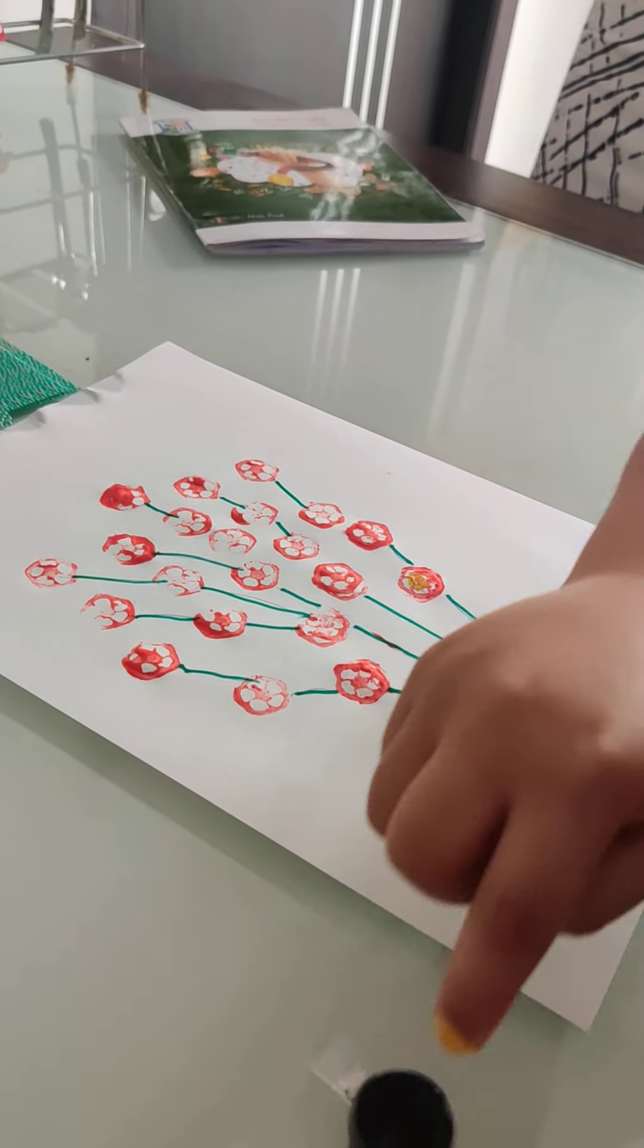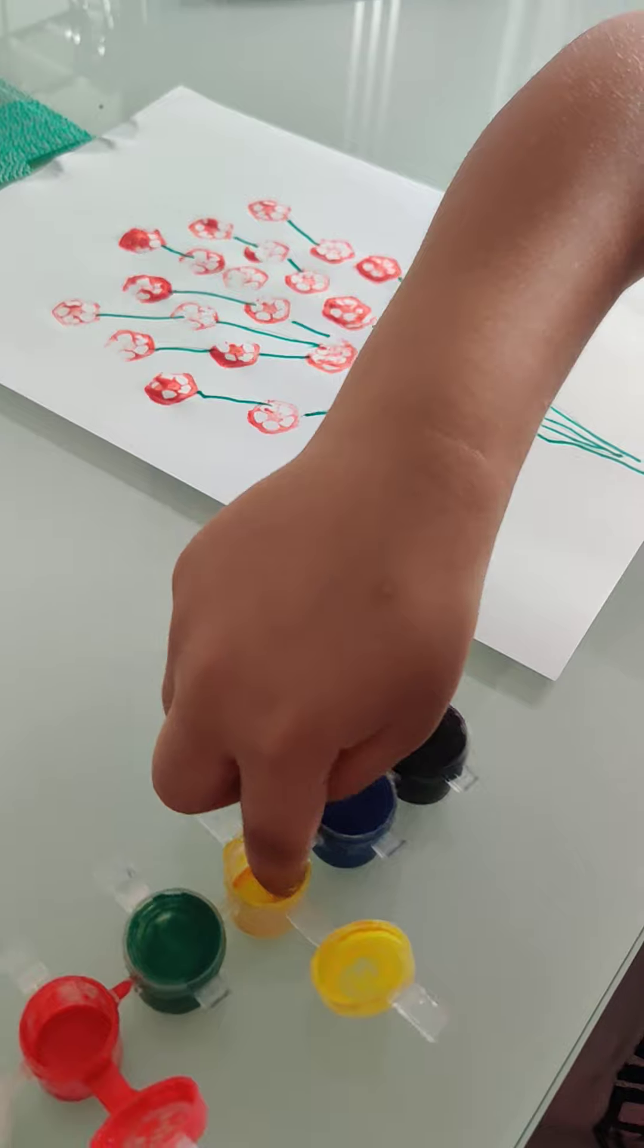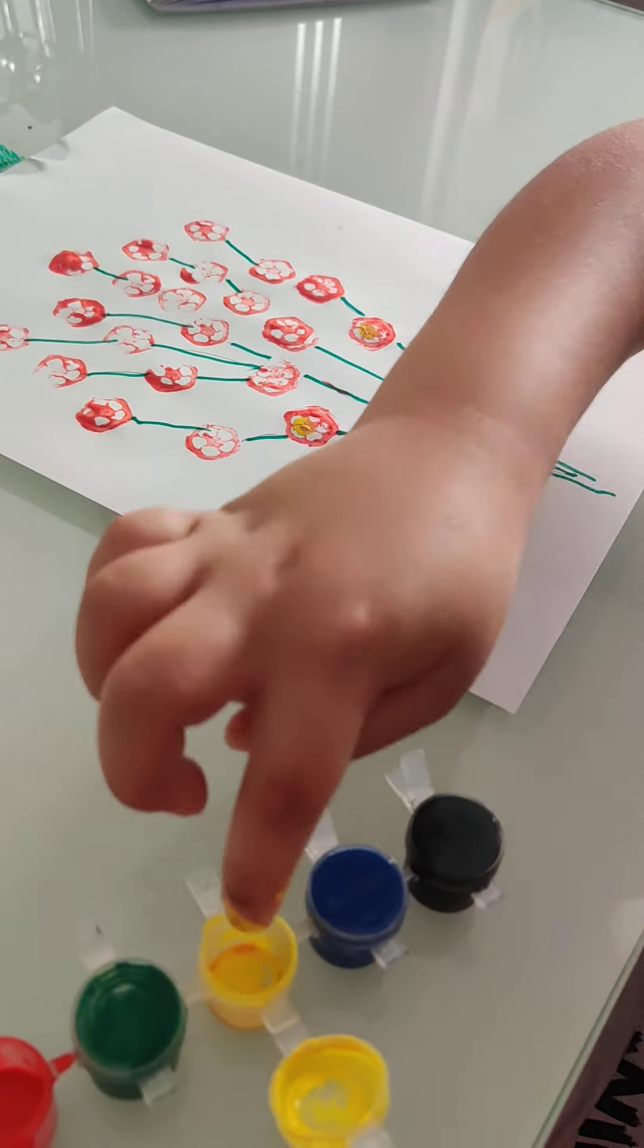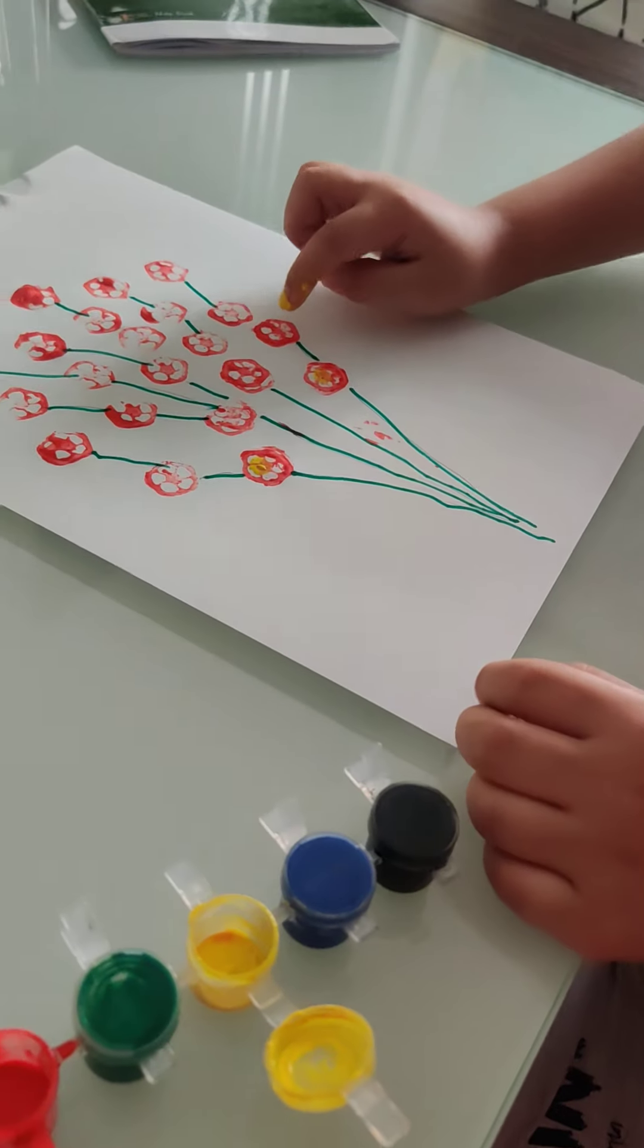Wow, now that the flowers are dried up, you're putting yellow in the middle. Yes. What color are you putting in the middle, Vivan? Yellow. Oh, that's good.